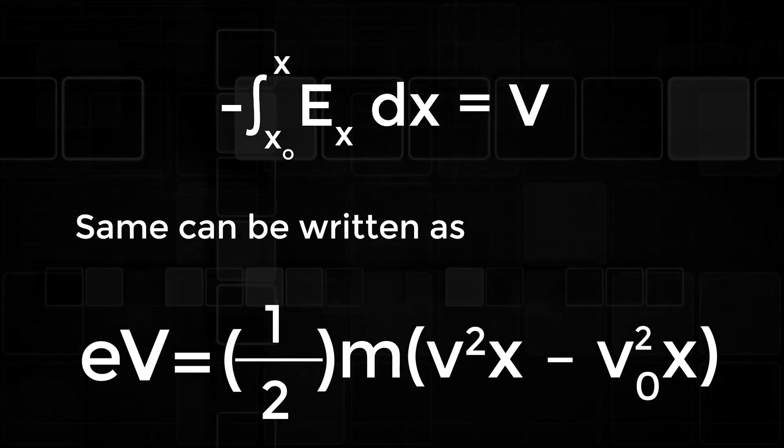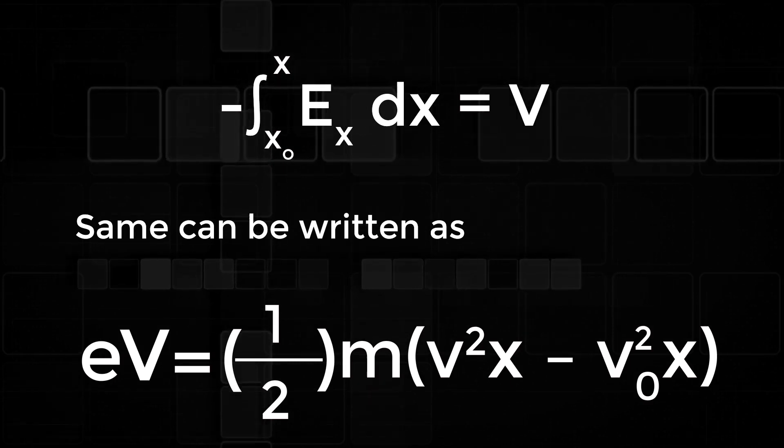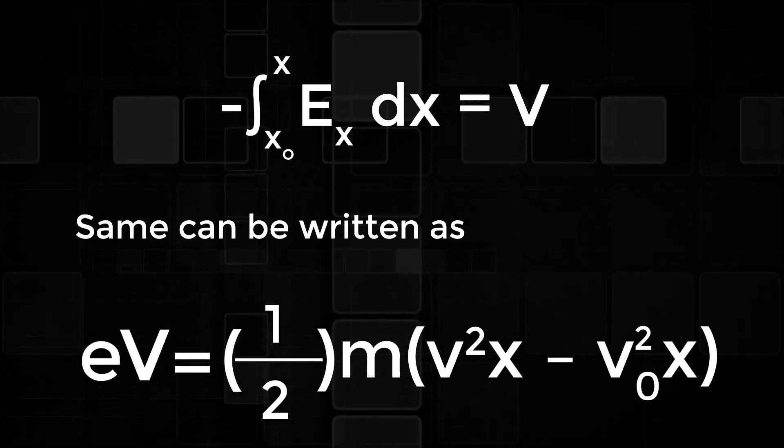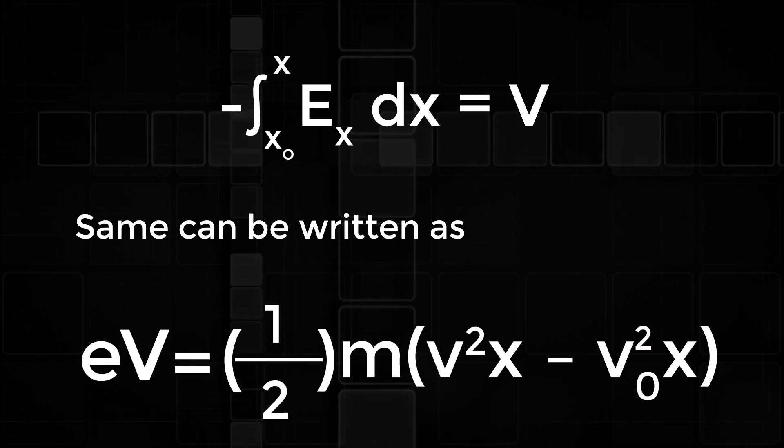This can be written as eV equals one-half times m times vx squared minus v0x squared.